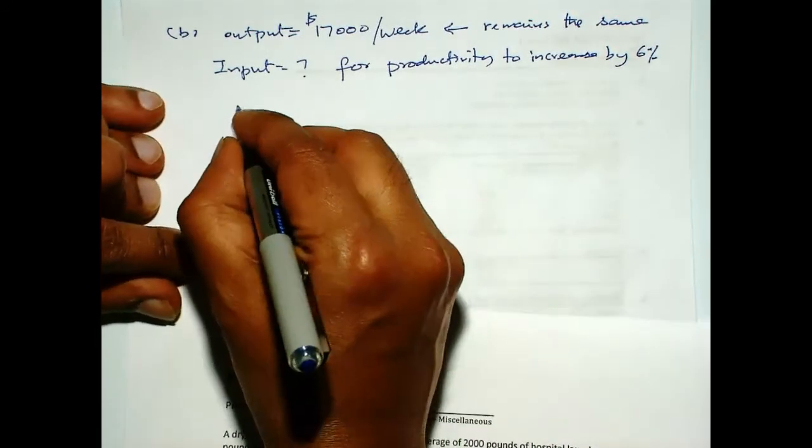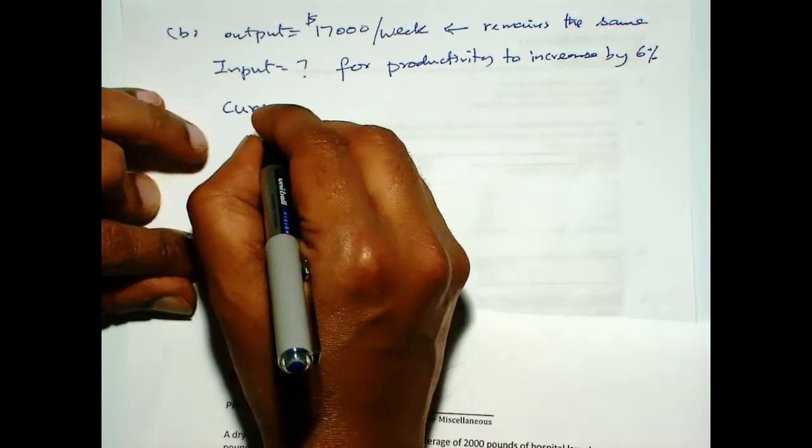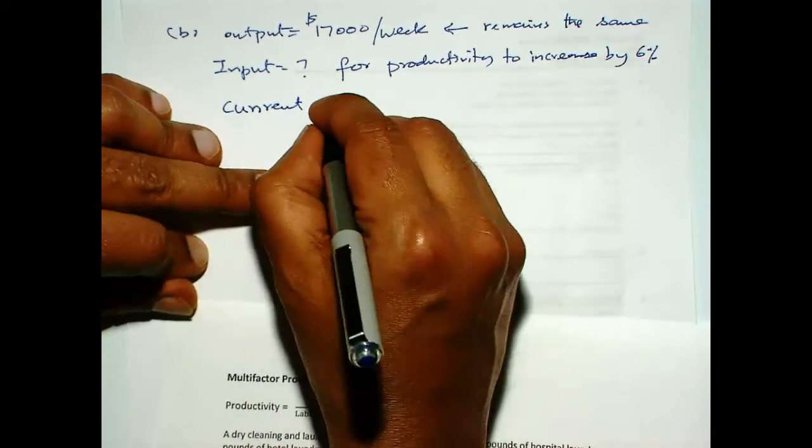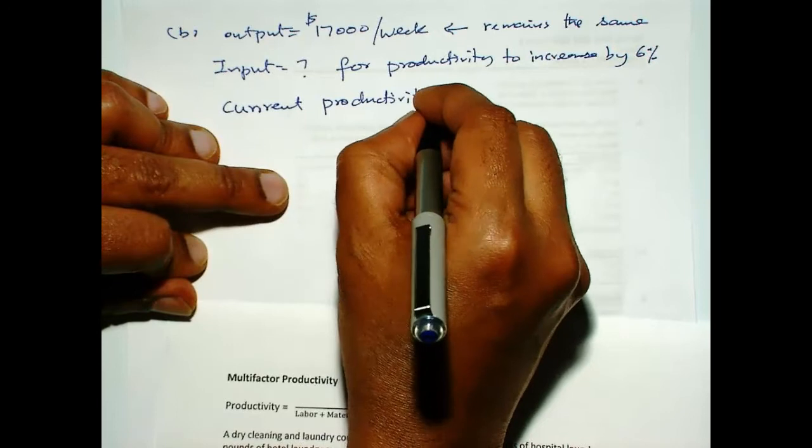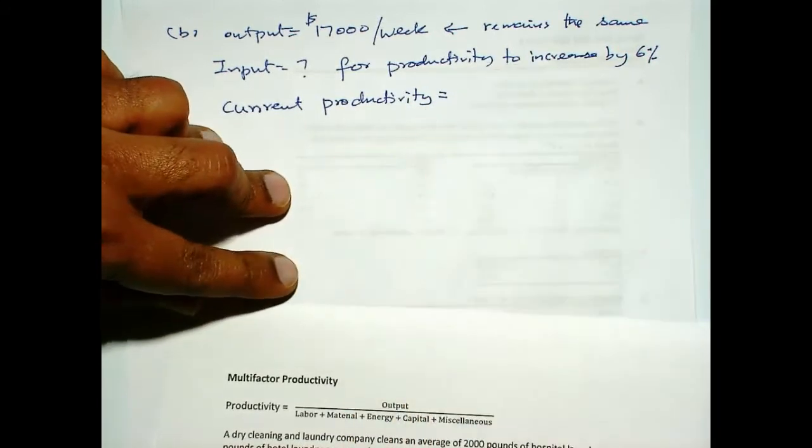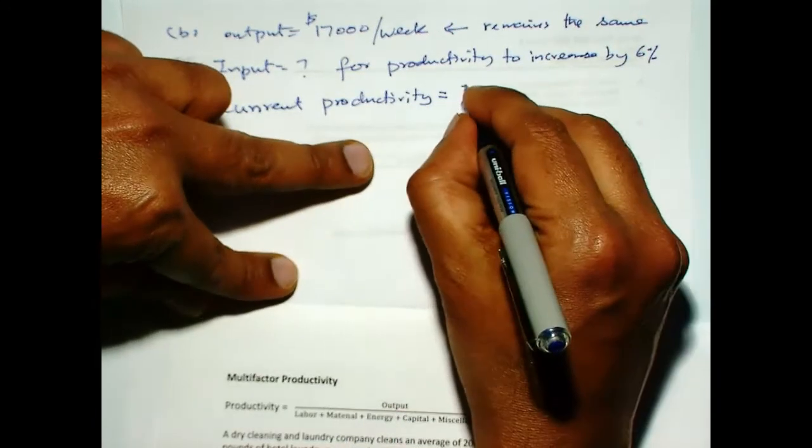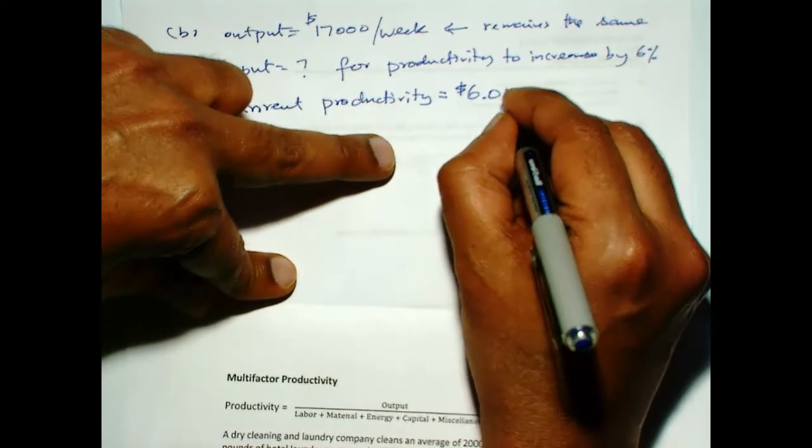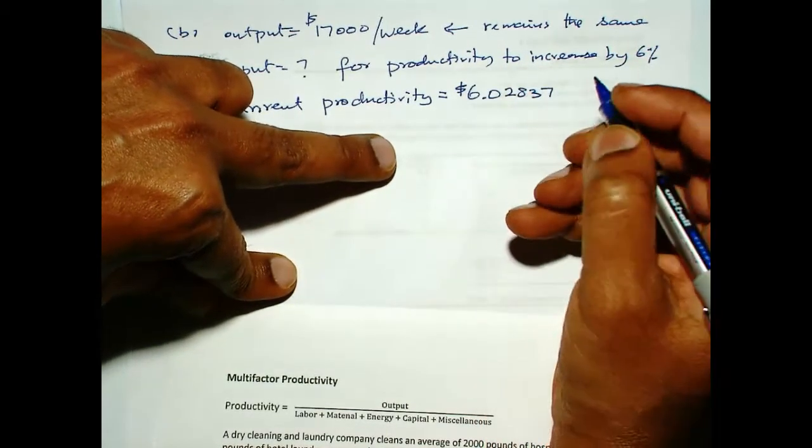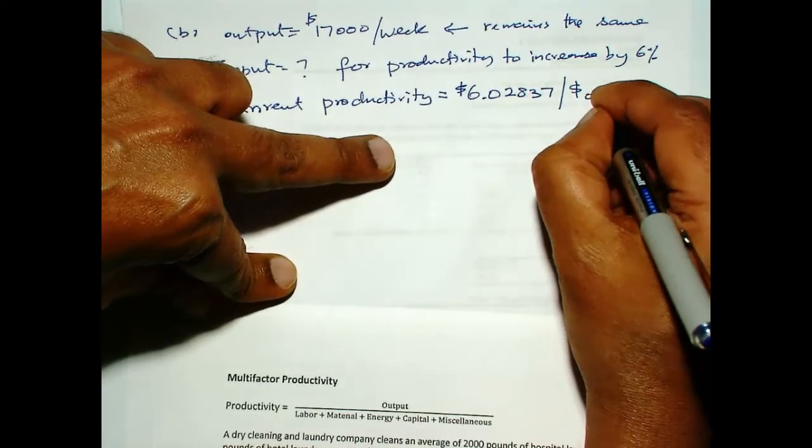So, let us see our current productivity is, we calculated this in the previous video, that is 6.02837 per dollar of input, right? So, we calculated that right here.